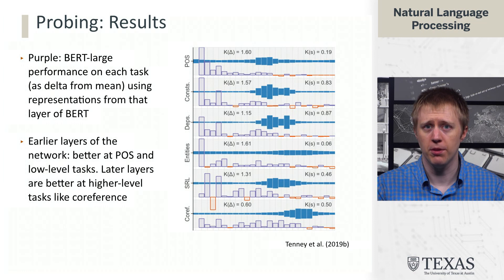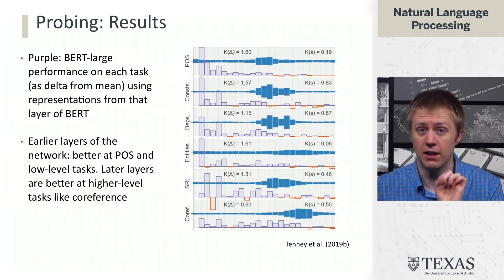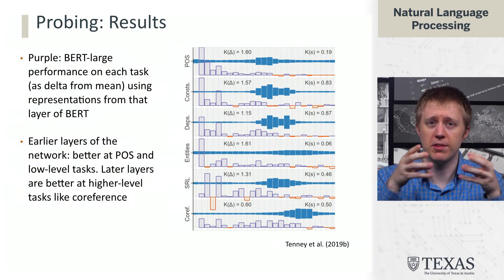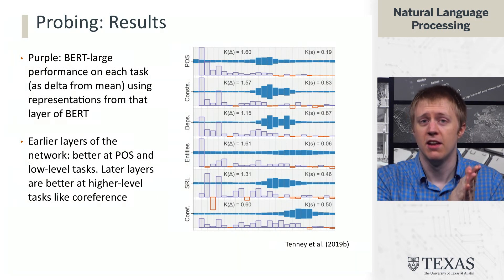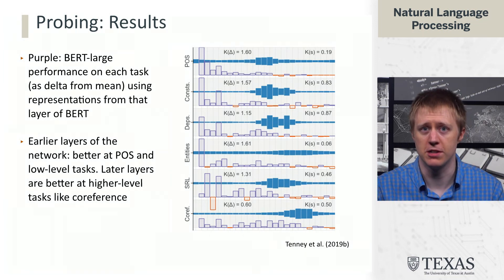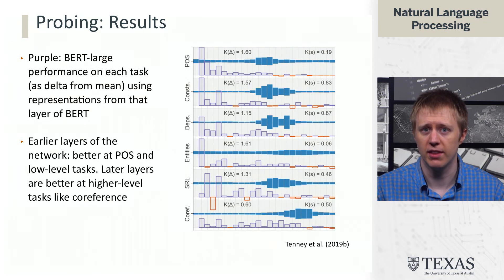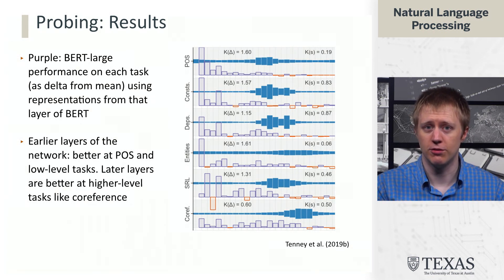In the results shown in purple, they display the delta from the mean representation using representations from each particular layer. For part-of-speech at the top, there is a very high purple bar early in the network, which then drops off — showing that early on, the representations are much better at predicting part-of-speech than they are later. The model forms representations with a lot of part-of-speech information early, and those representations gradually become less aware of it. Other things pick up after a while: semantic role labeling does well close to the input and also in the middle of the network, while co-reference resolution at the bottom does okay throughout.